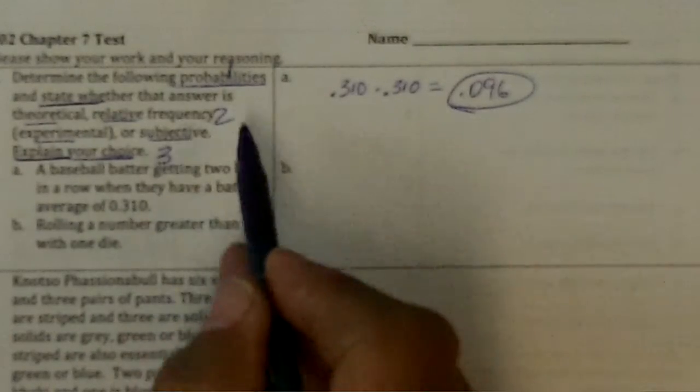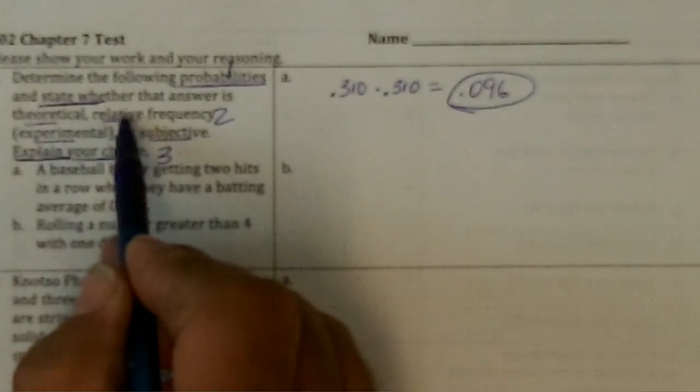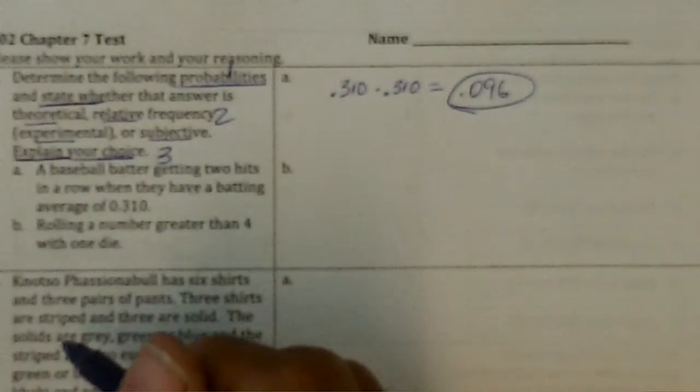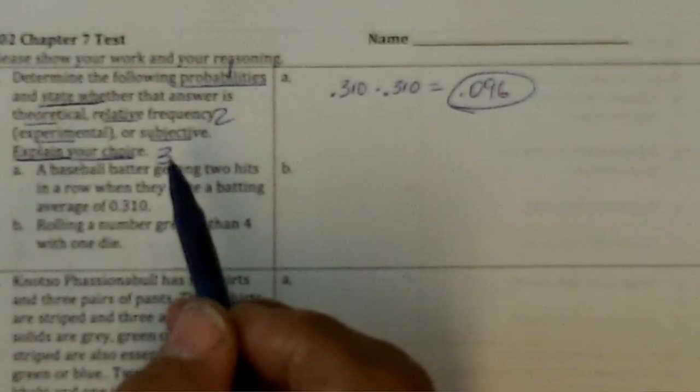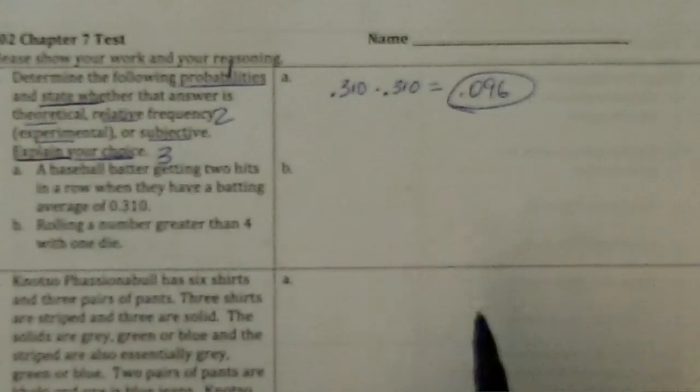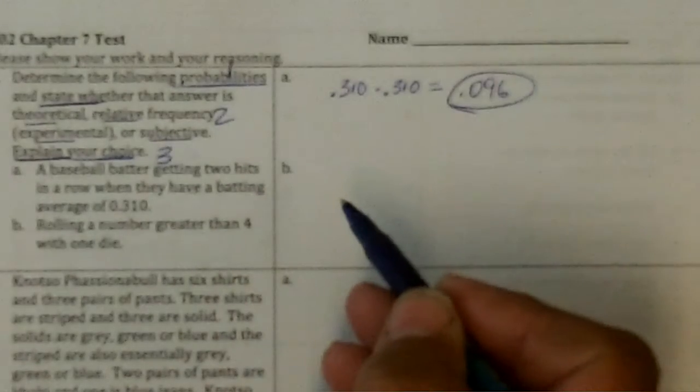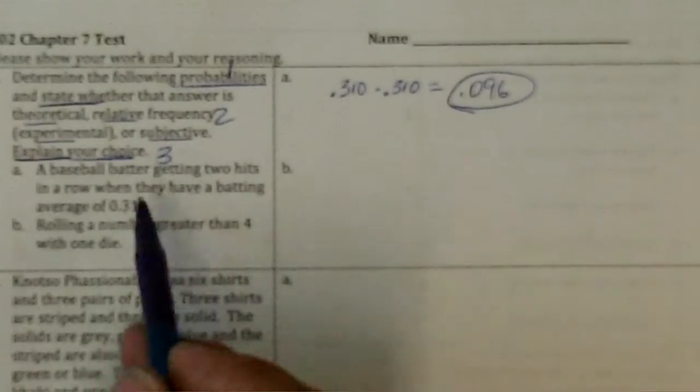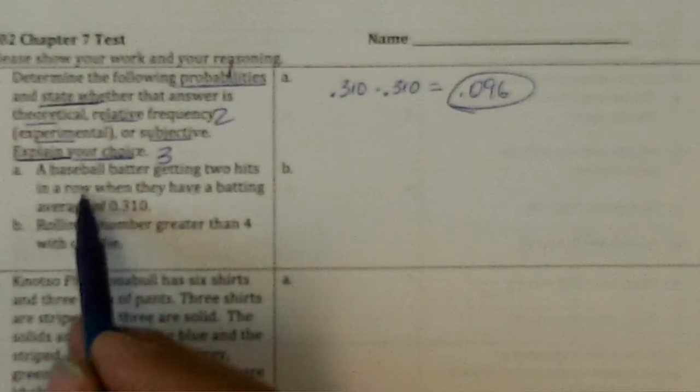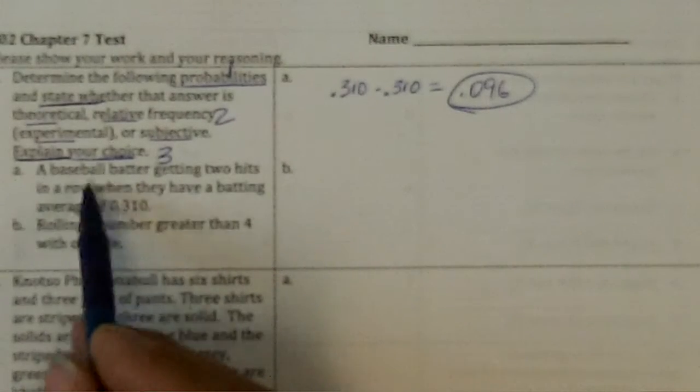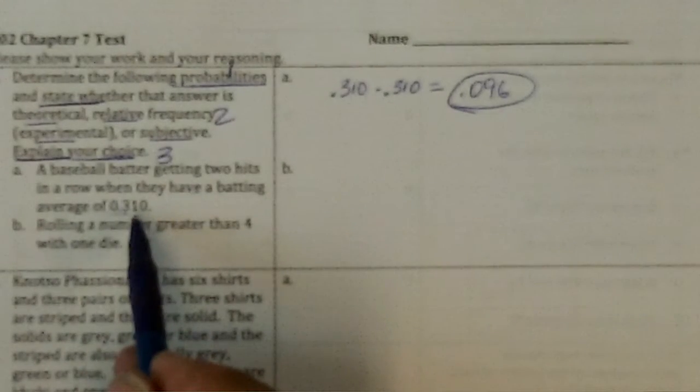Now, second question, is that theoretical, relative, or subjective? Theoretical is the kind where you can list all the outcomes and find out how many outcomes are the correct one. You can't list the outcomes, all the possible outcomes from a baseball batter hitting the ball.